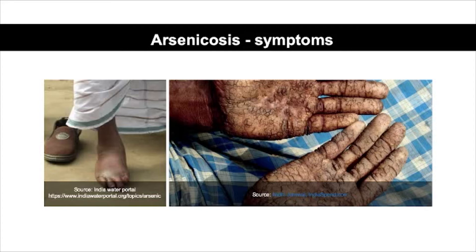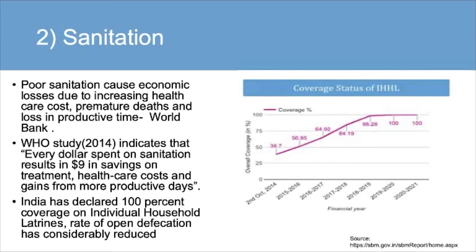The annual national rural sanitation survey of 2018-19 states that 96.5% of rural households have access to toilets, and recent statistics show 100% of households have access to toilets. However, poor sanitation causes economic losses due to increasing healthcare costs, premature death and loss of productive time. A WHO study from 2014 estimated that every dollar spent on sanitation generates returns of up to $9 through improved health and better productive employment.